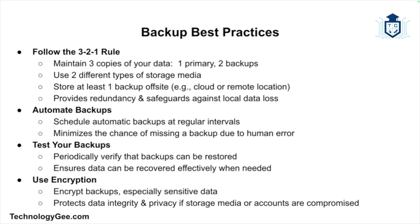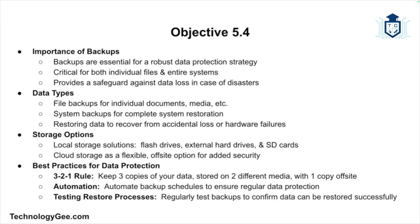Here are some best practices for data backups. First is the 3-2-1 rule: keep three different copies of your data — one primary copy and two backups — stored on two different types of media, with at least one copy off-site such as in the cloud or at a remote location. This ensures redundancy and protects against local disasters. You should also set up automated backups at regular intervals to reduce the risk of forgetting to back up manually. Periodically test your backup and restoration process to ensure files can be successfully recovered. For sensitive data, use encryption to protect your backups, especially when using cloud storage, ensuring data remains secure even if the backup media or account is compromised.